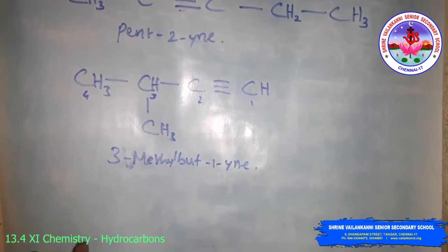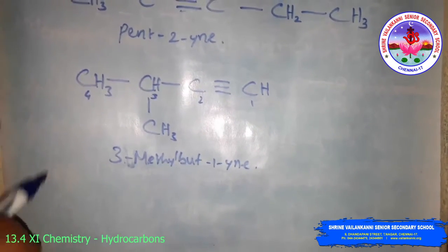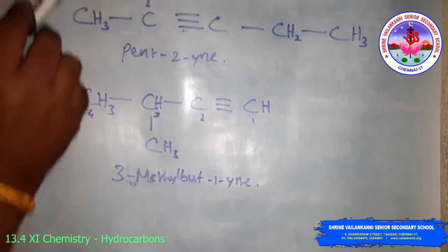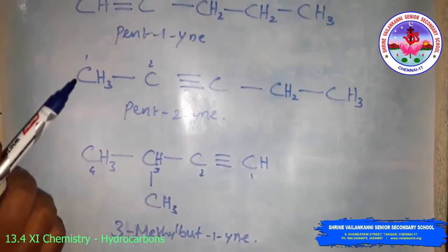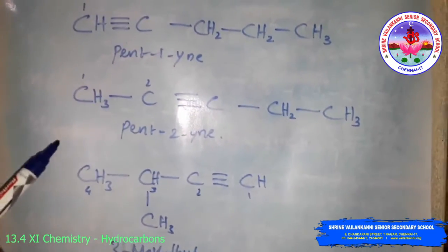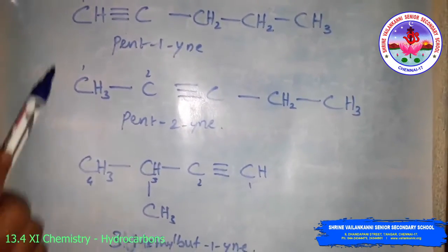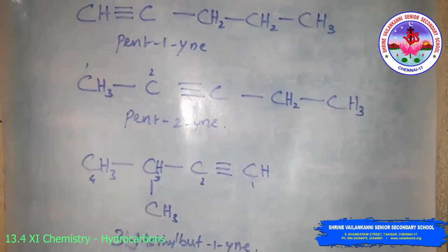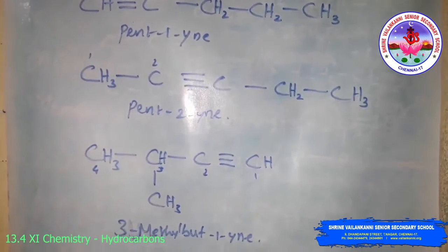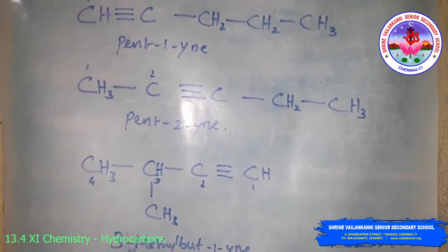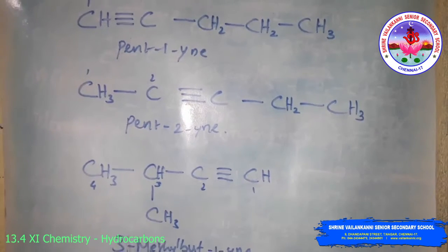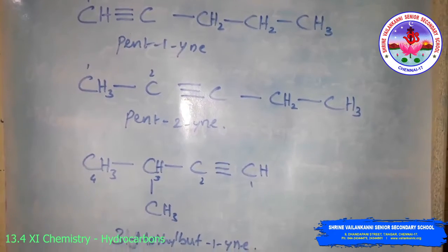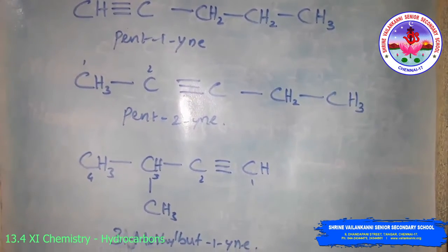Looking at these: the first two structures are position isomers. Structures one and three are chain isomers. Now we will see the structure of the triple bond.